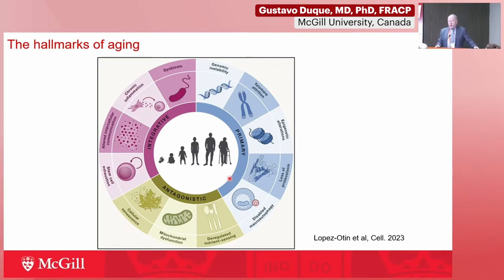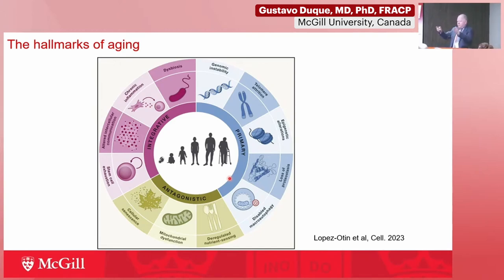An important point from the hallmarks of aging framework is that in our field we are now trying to target several of these mechanisms to treat more than one chronic condition. This is the new concept we call geroscience — the idea that our vision of one disease, one therapeutic target has changed. We identify mechanisms shared by different conditions and then can target several diseases at the same time.